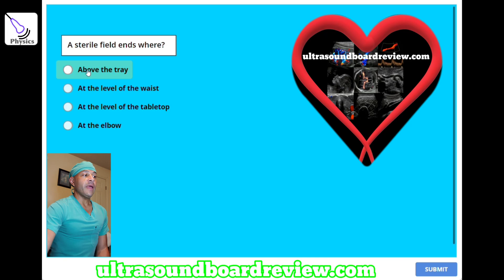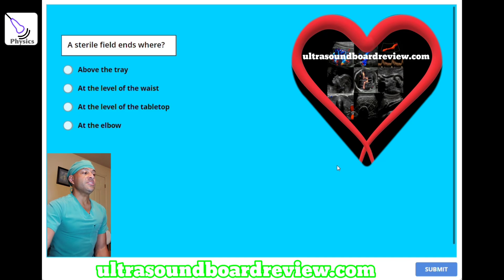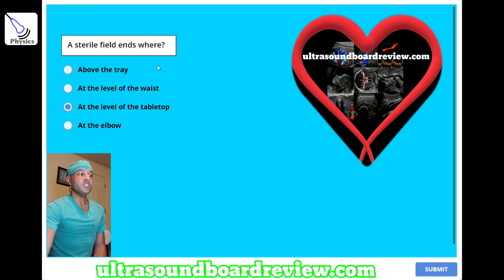A sterile field ends where? A, above the tray; B, at the level of the waist; C, at the level of the tabletop; or D, at the elbow. The answer is C, at the level of the tabletop. This is one of those questions where you have to choose the best possible choice — below the elbow and below the waist is non-sterile, but for this question the sterile field ends at the level of the tabletop.